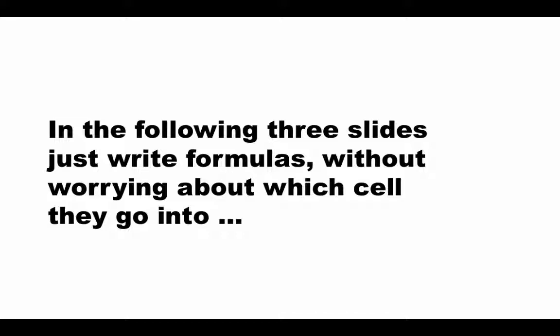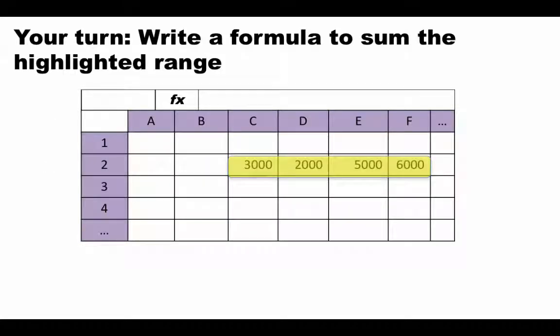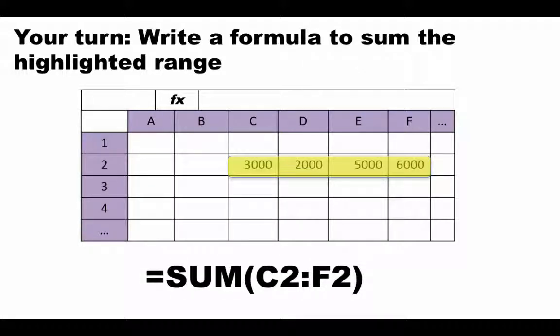In the following slides, just write the formulas without worrying about which cell they go into. Write a formula to sum the highlighted range. Pause the video, write your answer, and then proceed. There are several ways in which you could have written it, but the most succinct way to write it is SUM C2 colon F2. That's the easiest way to refer to the entire range. Of course you could have written equals C2 plus D2 plus E2 plus F2, but that's meaningless at this point. It's correct but it's not what you should be doing at this stage.